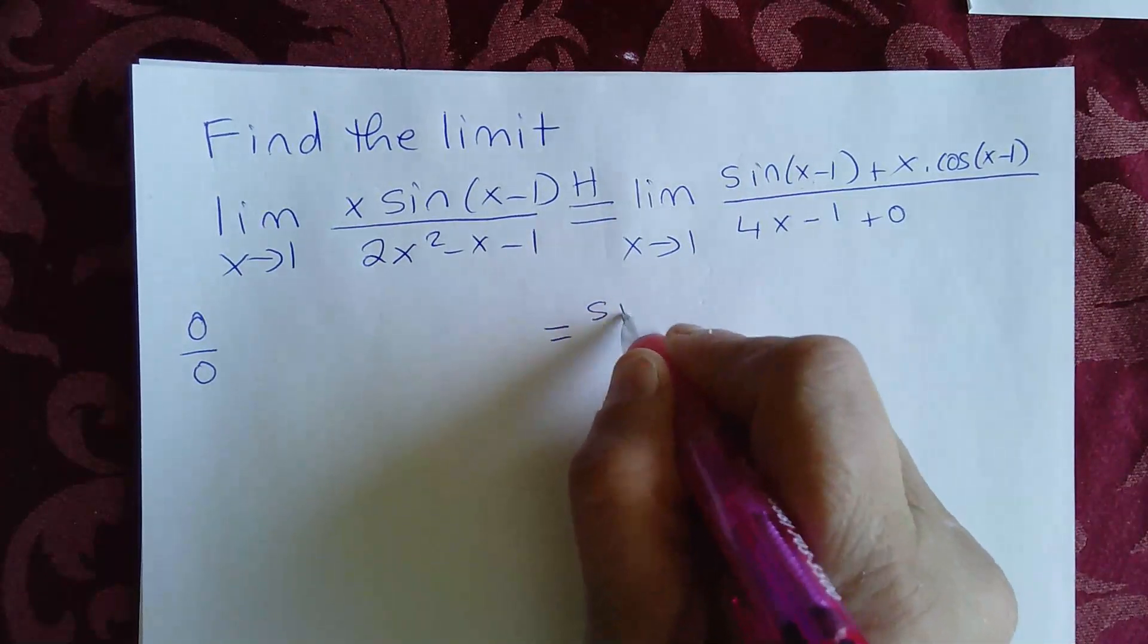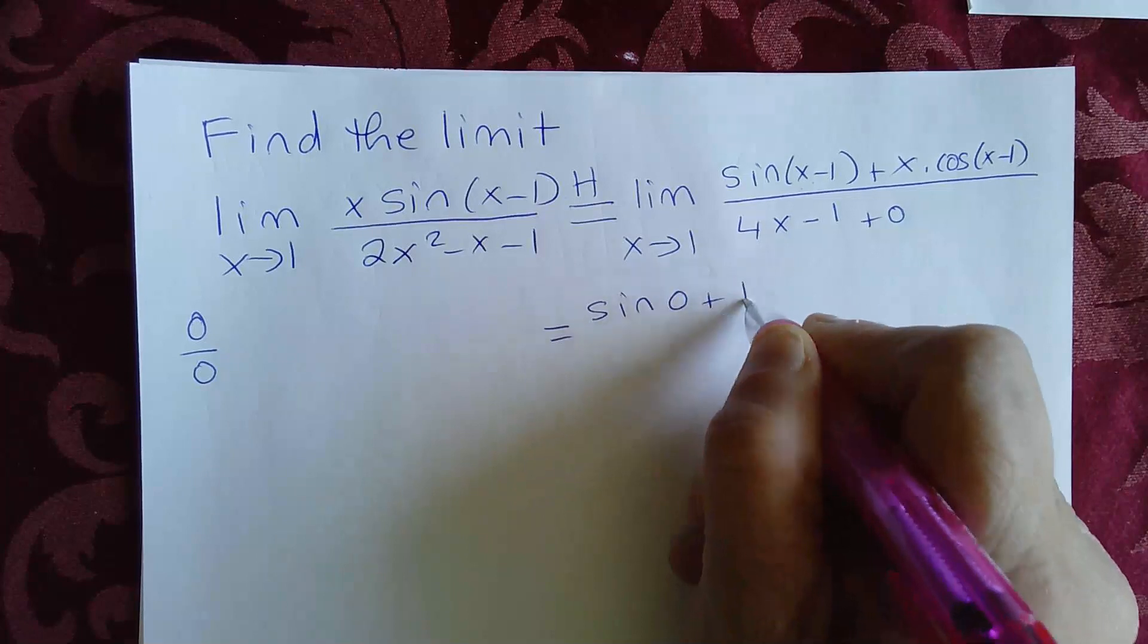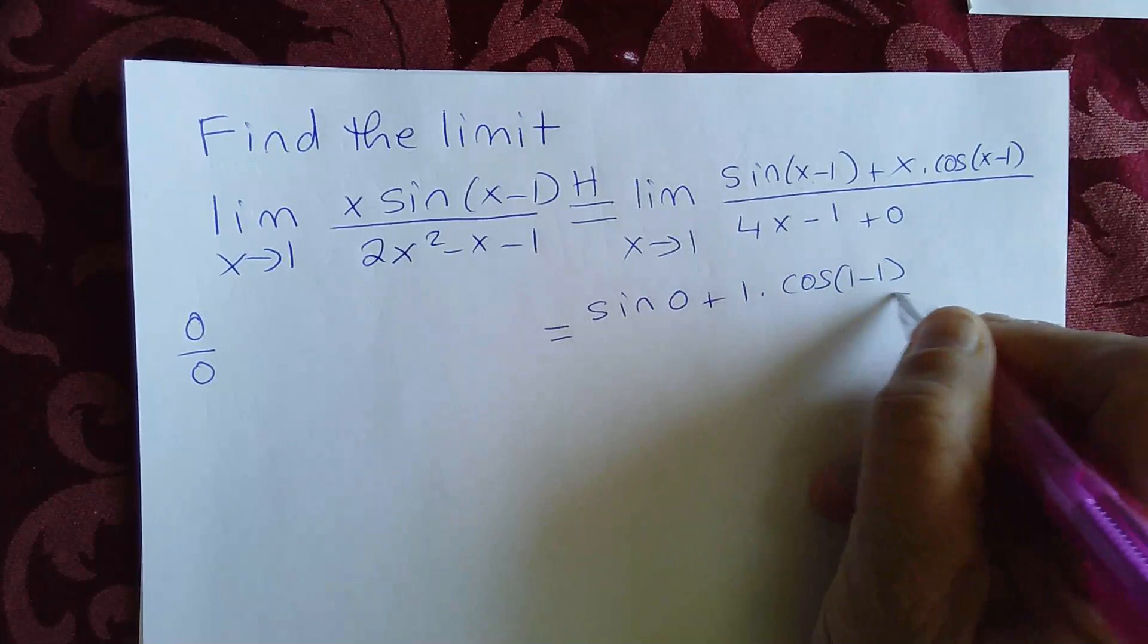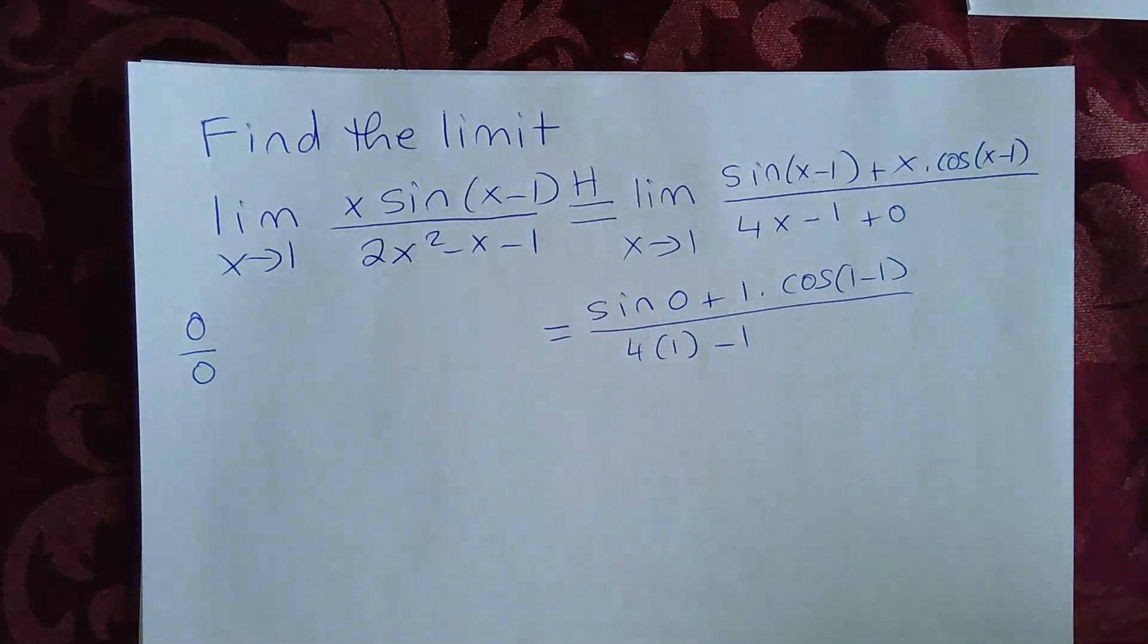So let me write it here, sine(1 minus 1), which is 0, plus 1 times cosine(1 minus 1), over 4 times 1 minus 1.